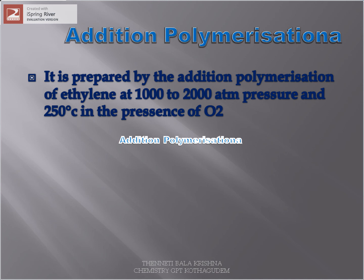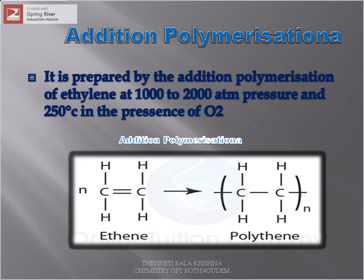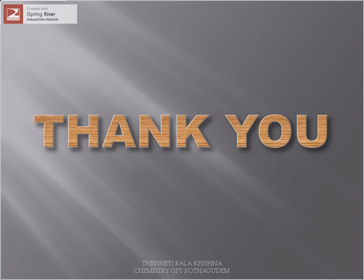An example of addition polymerization is polythene. Polythene is prepared by addition polymerization of ethylene at 1000 to 2000 atmospheres pressure, up to 50 degrees Celsius, in the presence of oxygen. The structure of ethylene is CH2=CH2. Ethylene undergoes addition polymerization to produce -[CH2-CH2]-n. Poly means many, mers means units, so polymer means many units. Polythene contains many number of ethylene molecules. Thank you, students.